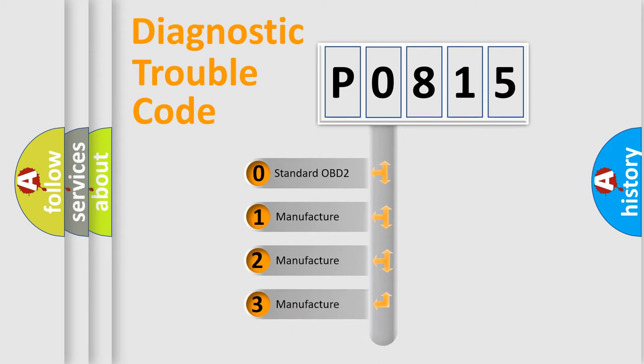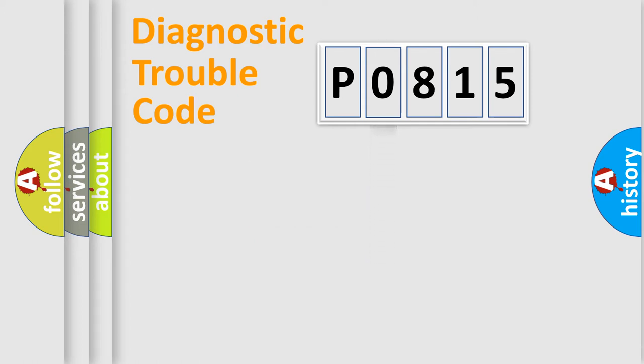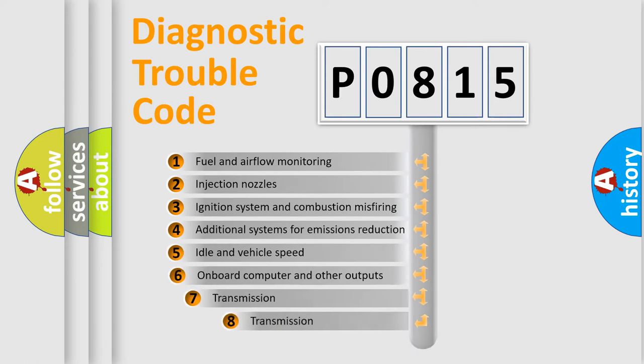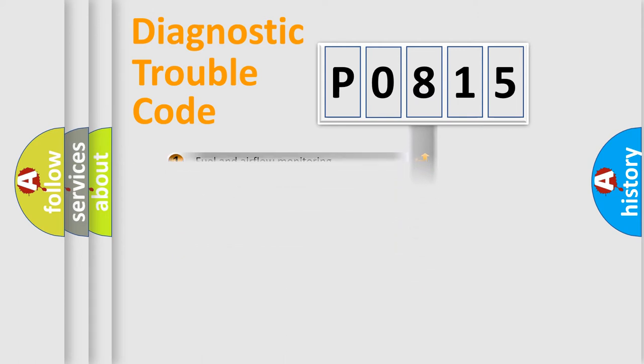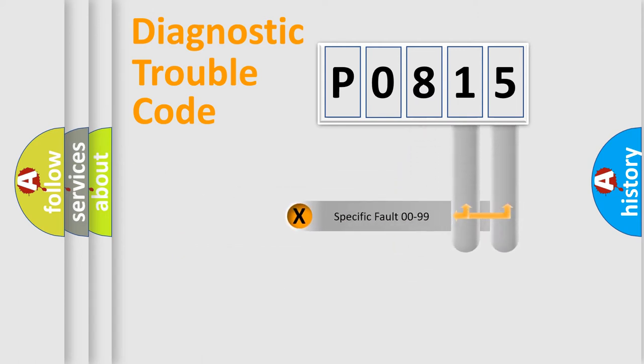If the second character is expressed as zero, it is a standardized error. In the case of numbers 1, 2, or 3, it is a manufacturer-specific error. The third character specifies a subset of errors. The distribution shown is valid only for the standardized DTC code.